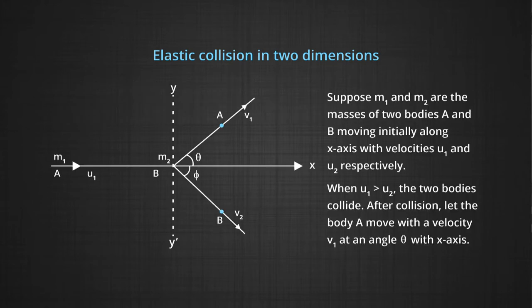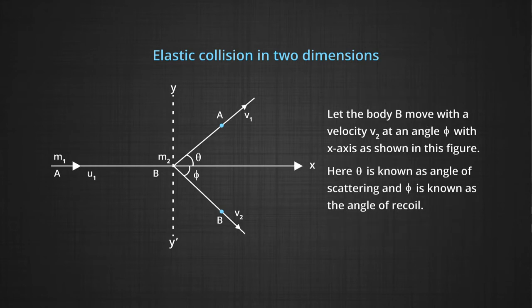Suppose M1 and M2 are the masses of two bodies A and B, moving initially along the x-axis with velocities U1 and U2 respectively. When U1 is greater than U2, the two bodies collide. After collision, let body A move with velocity V1 at angle theta with the x-axis, and body B move with velocity V2 at angle phi with the x-axis, as shown in Figure 1. Here, theta is known as the angle of scattering and phi is known as the angle of recoil.